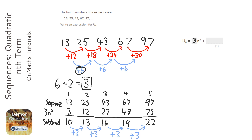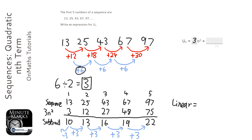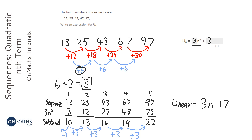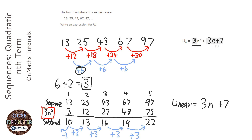That's a linear sequence, so we've got to find the nth term of it. To do that, we find the zeroth term — we go back one and subtract 3 — and that tells me it's going to be 7. So we know we're going to add 7, and we know it goes up in 3, so it's going to be 3n plus 7. We've got our 3n squared already, and we just need to add 3n plus 7. So: find the quadratic bit — the squared bit — then find the linear bit, and just add them together.